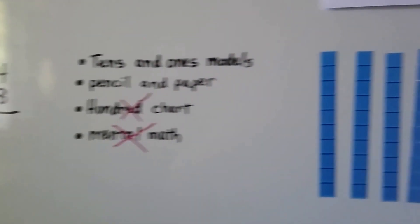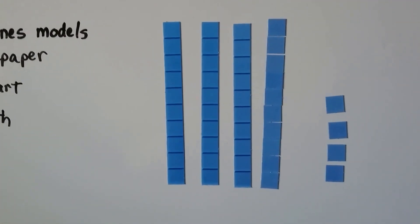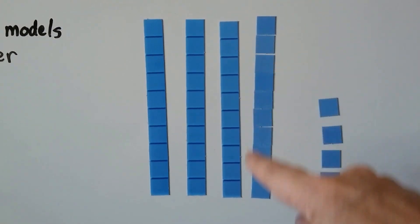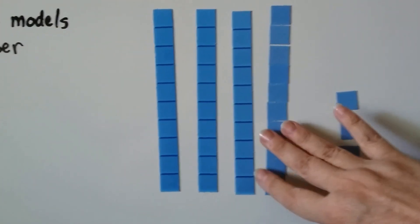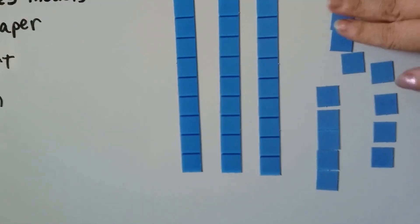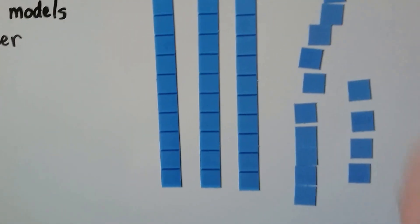We have 44 minus 18. Here we have 44 and we need to take 18 away. We break this one up, this 10 up as some ones.